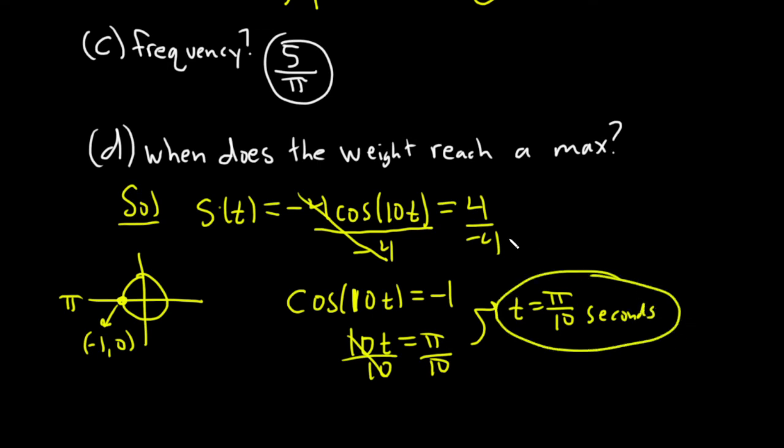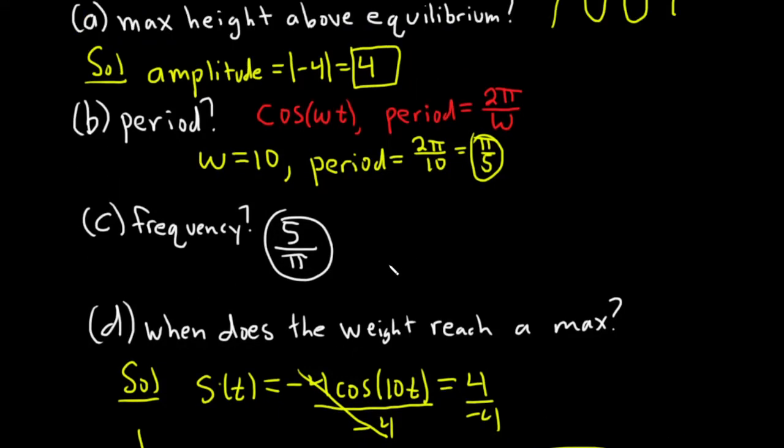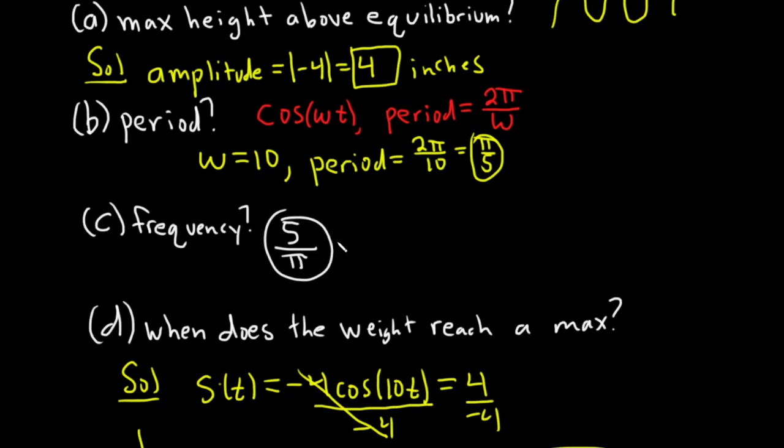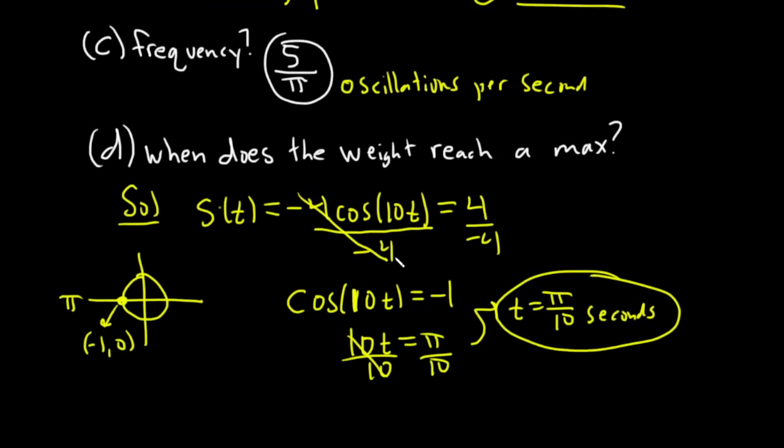I might have forgotten some units up here. Yeah, I think this should be 4 inches. And this one here is 5 over pi oscillations per second, just in case you really want the units. And this one is pi over 5 seconds. I'm really bad about units. I tend to be pretty sloppy with the units, but sometimes it's important. I hope this has been helpful. Good luck.